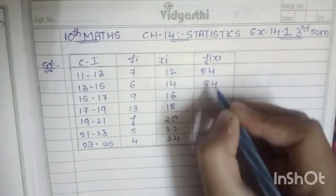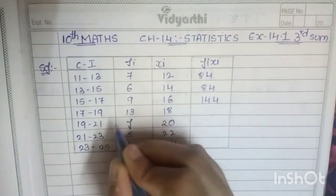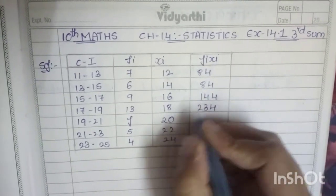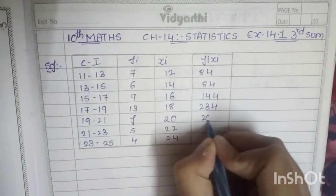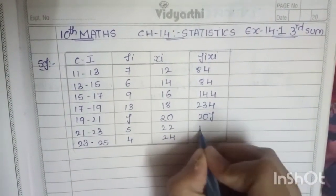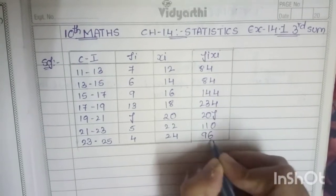9 into 16 is 144, 13 into 18 is 234, f into 20 you have to write it as 20f, 5 into 22 is 110, and 24 into 4 is 96.